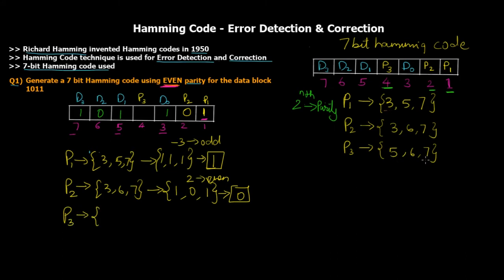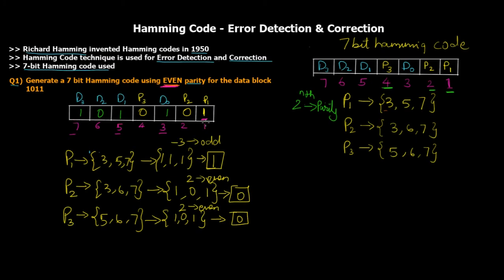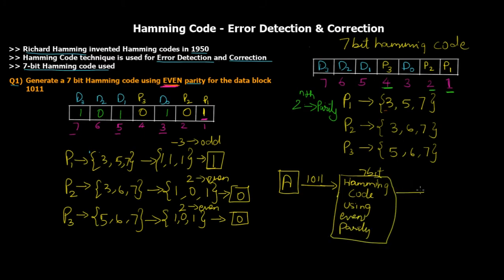For P3, we check positions 5, 6, and 7. The values there are 1, 0, 1. The number of high bits is two, which is even, so we keep P3 as 0. We now have the final 7-bit Hamming code: 1 0 1 0 1 0 1 — which corresponds to data 1011 using even parity. The sender applies this Hamming code and sends 1010101 over the network to receiver B.